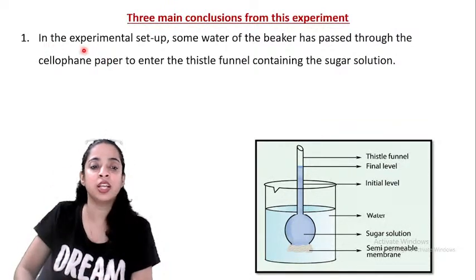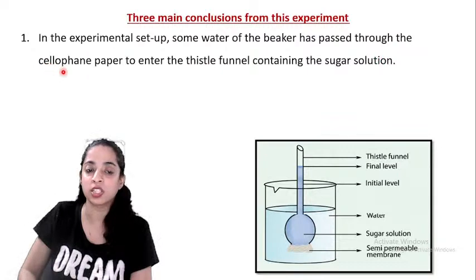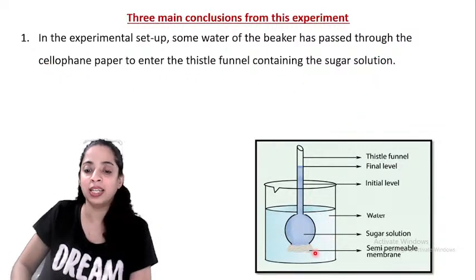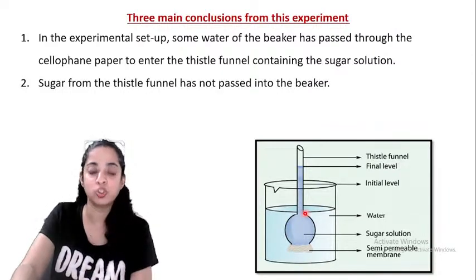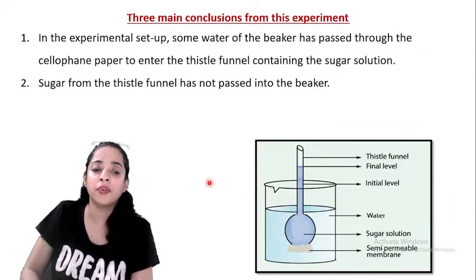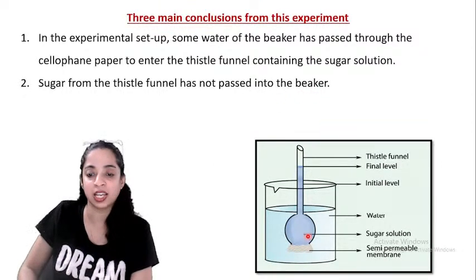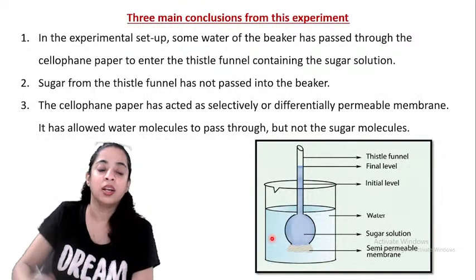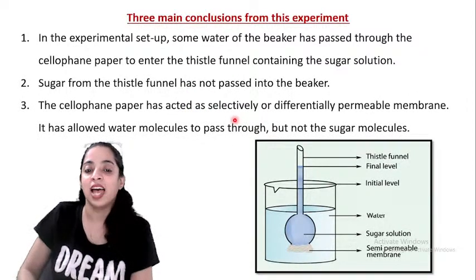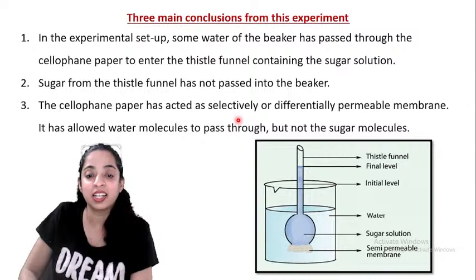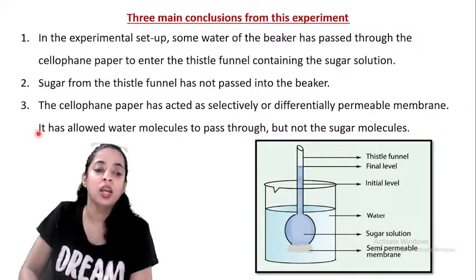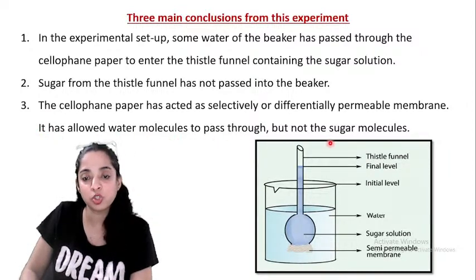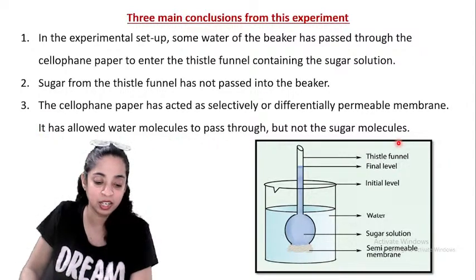Three conclusions from this experiment: first, water from the beaker has passed through the cellophane paper to enter the thistle funnel containing the sugar solution. Second, sugar from the thistle funnel has not passed into the beaker. Third, the cellophane paper acted as a selectively or differentially permeable membrane — it allowed only water molecules to pass through, but not the sugar molecules.